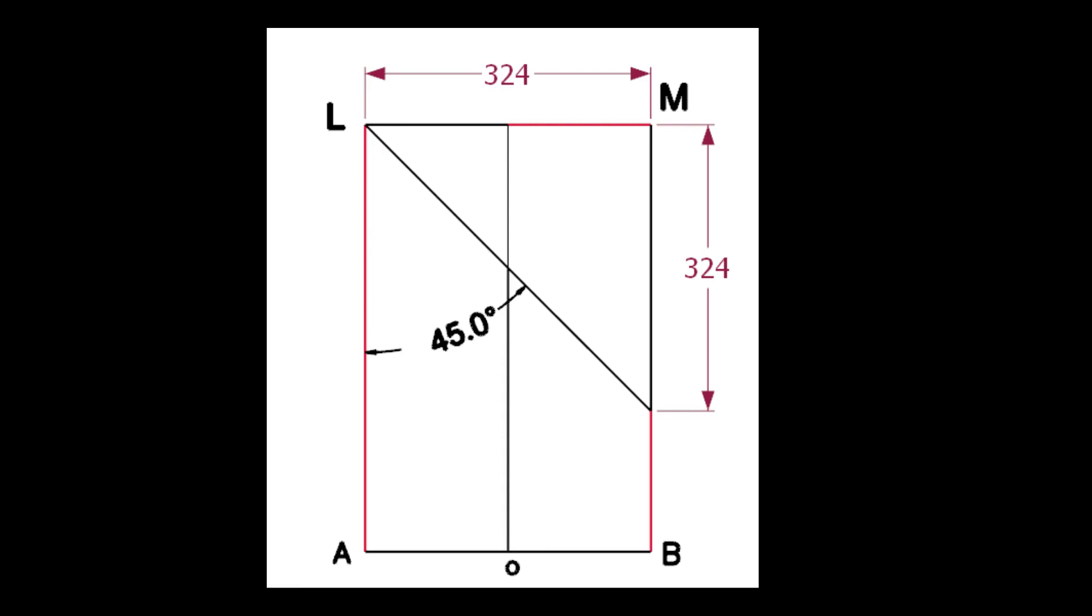Draw the lines AL and BM. Calculate the cutback of the miter. Since the including angle is 45 degrees, the cutback is same as the pipe OD.